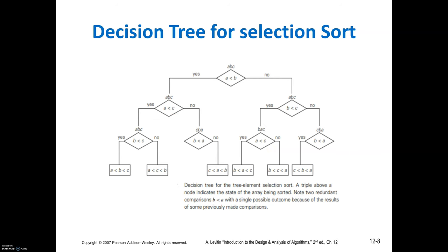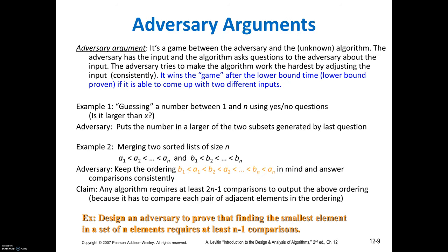Adversary arguments involve a game between an adversary and an unknown algorithm. The adversary has the input and the algorithm asks questions to the adversary about the input. The adversary tries to make the algorithm work the hardest by adjusting the input. It wins the game after the lower bound time if it is able to come up with two different inputs. An example is guessing the number between 1 and n using yes-or-no questions — the adversary puts the number in the larger of two subsets generated by the last question.